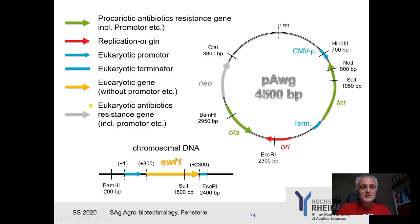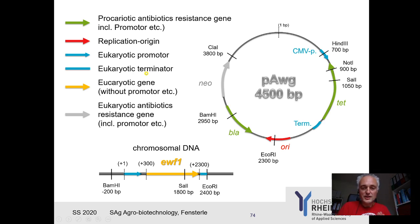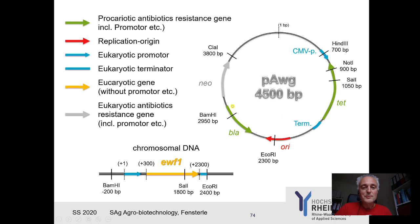Here is our chromosomal DNA with our gene EWF1. We start counting at plus one, and we can see the destination of the elements: a eukaryotic promoter from fungi and a terminator. Here we have our plasmid — at the end we want to bring our gene into this plasmid. The plasmid has a eukaryotic promoter, a terminator, a tetracycline resistance gene, an origin of replication, a prokaryotic ampicillin resistance gene, and a neomycin phosphotransferase gene for selection in eukaryotic cells.